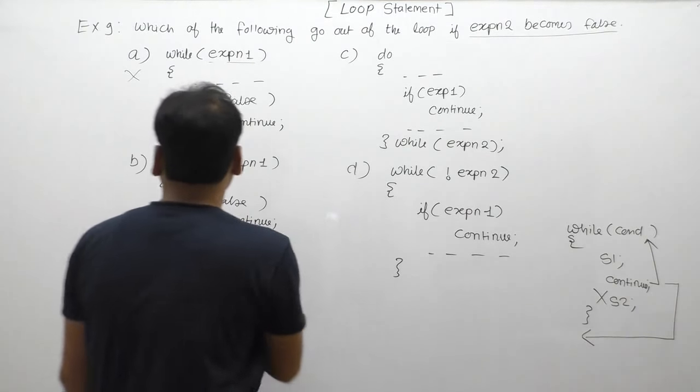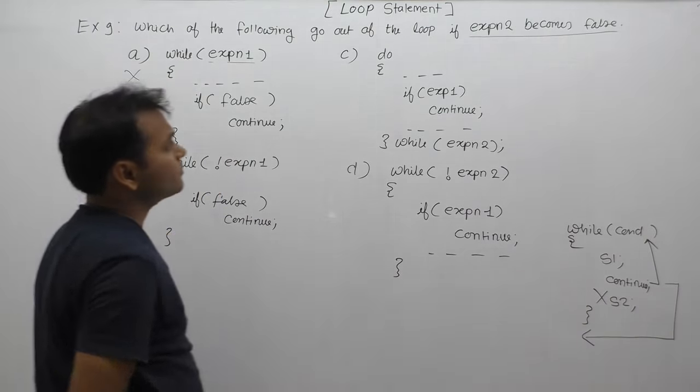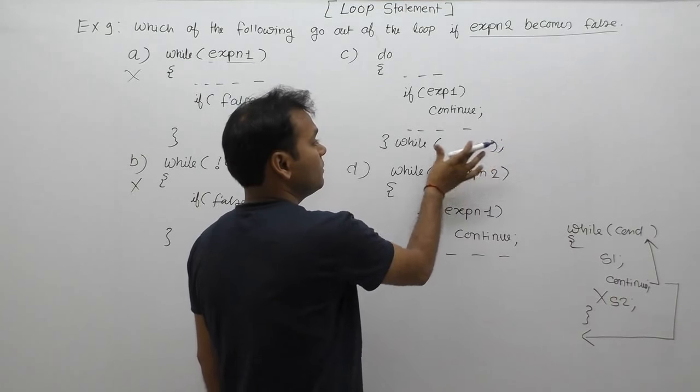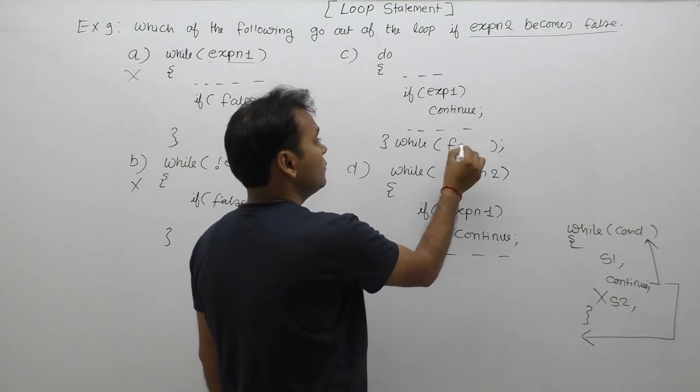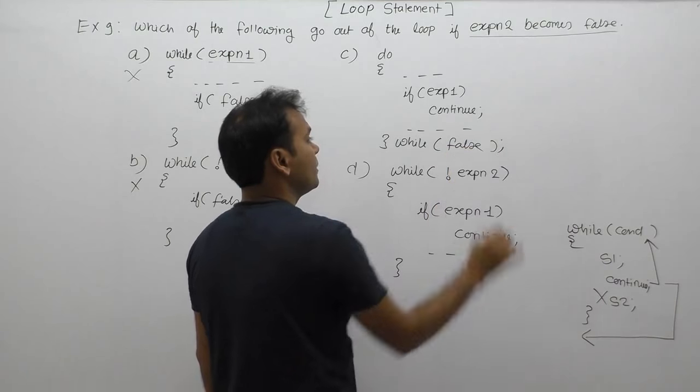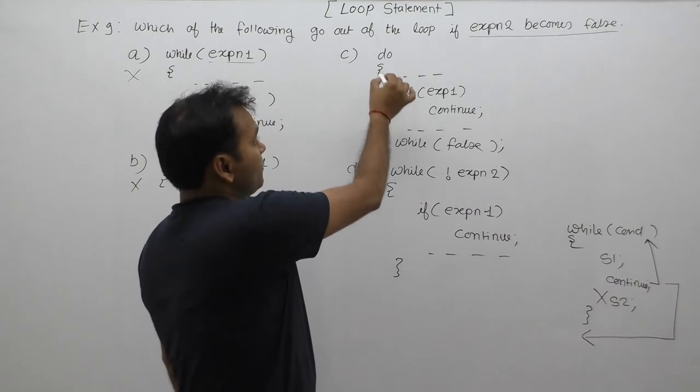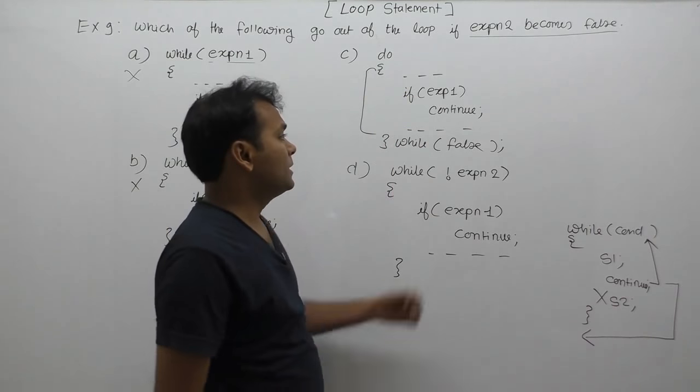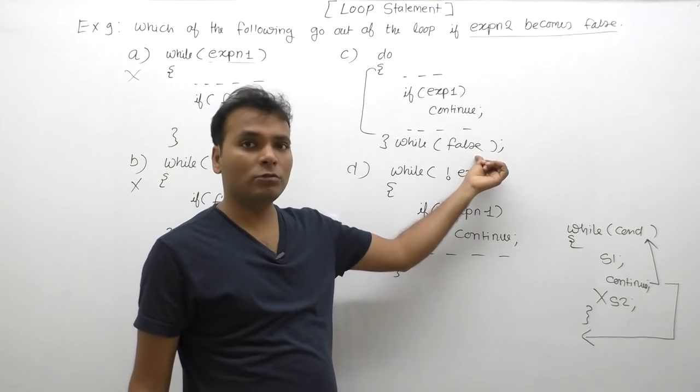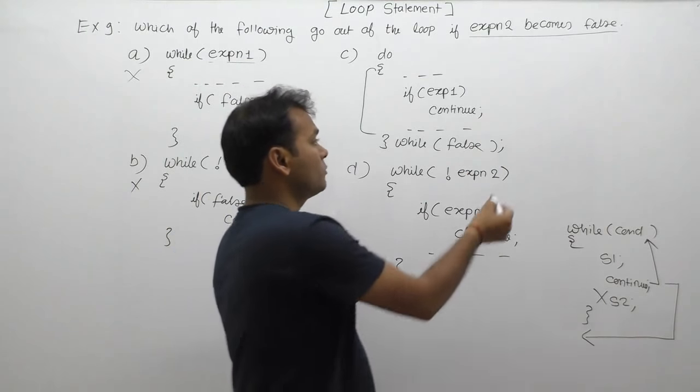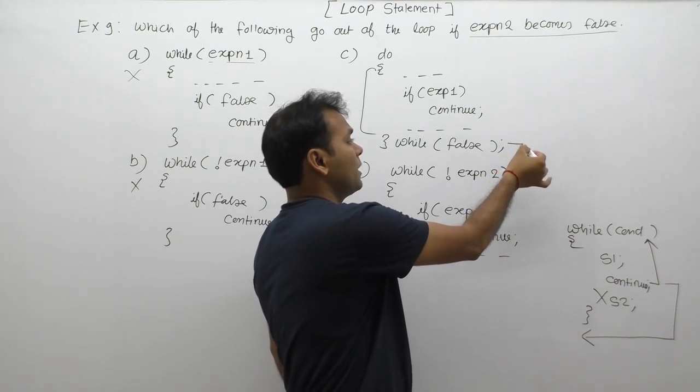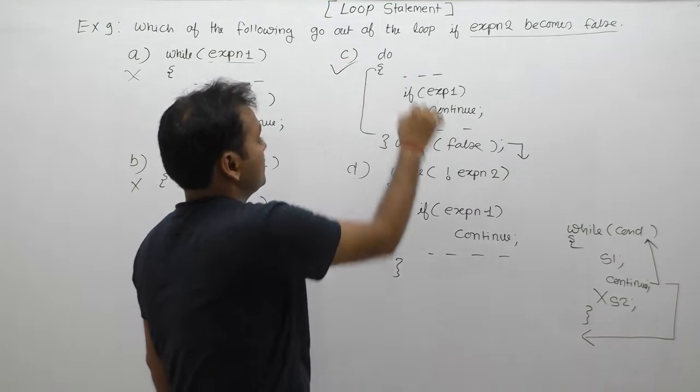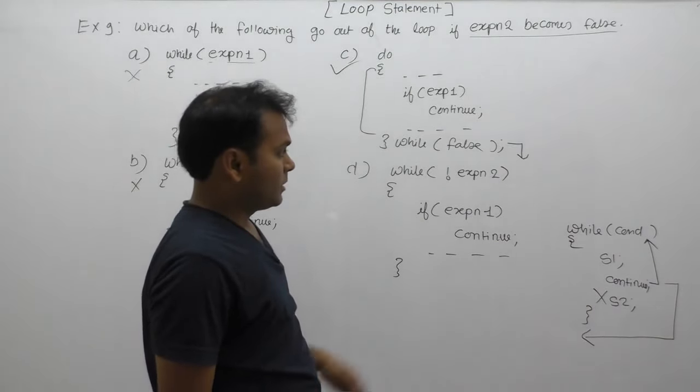Other than that, it is not a correct option. See, expression two, we put false. Currently the loop type is do-while. In this case, the first time do-while completes the body part. Then the condition is tested. Expression two is false. Whenever control goes, it immediately goes outside the body of do-while. Therefore, it is a correct answer or correct option.